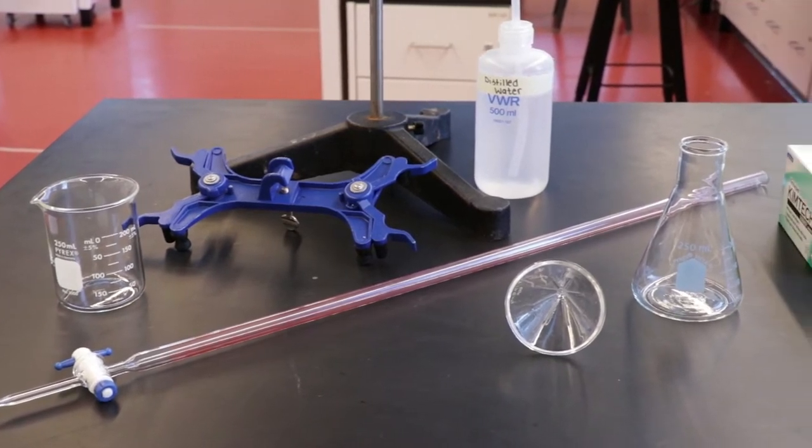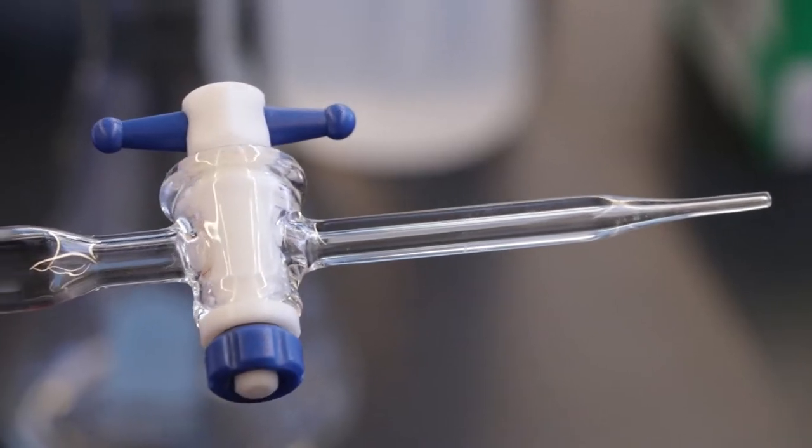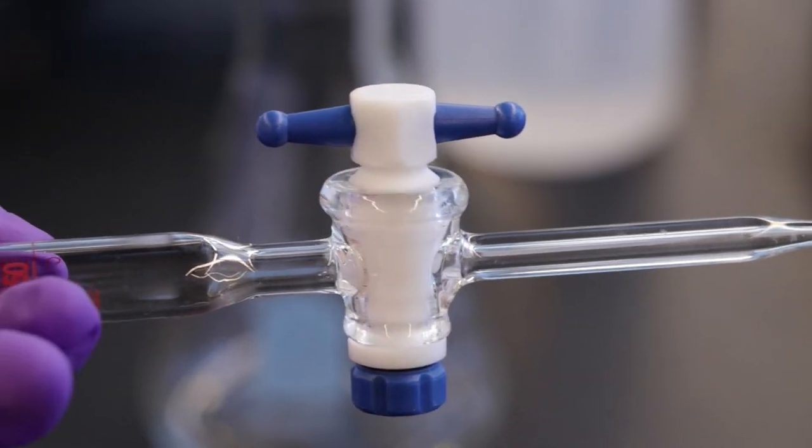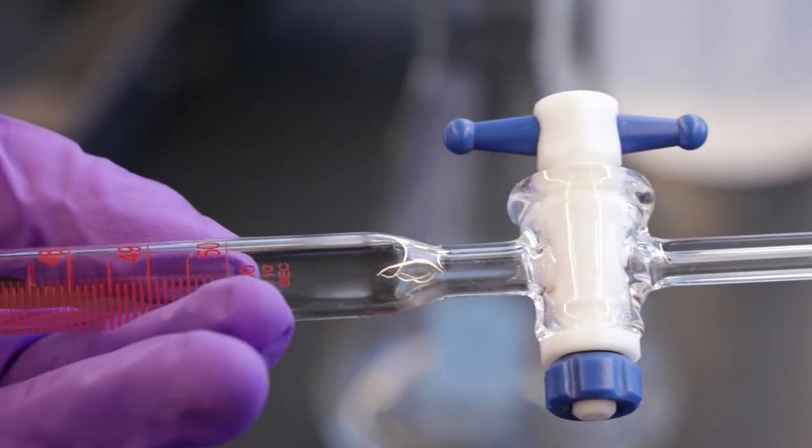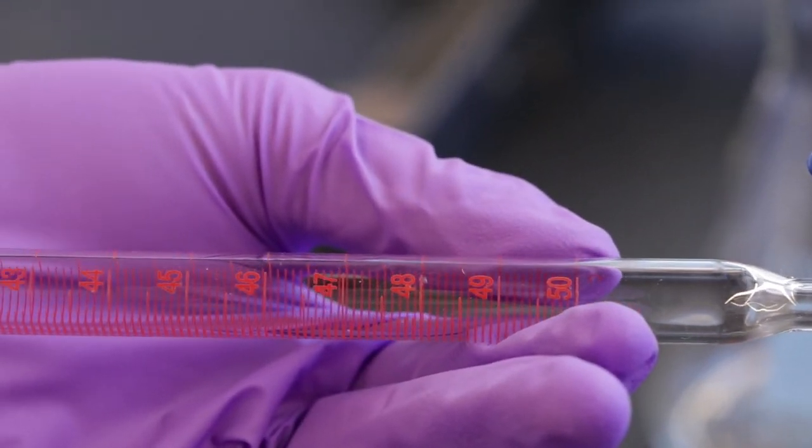Here we will demonstrate how to use a burette. Burettes are most often used for accurate dispensing of a liquid during a titration. The burette has graduated marks from which the accurate volume of the dispensed liquid can be determined.